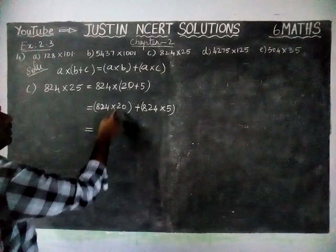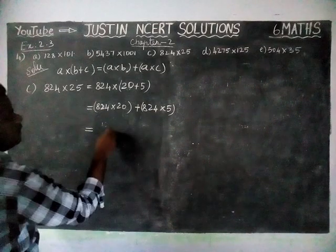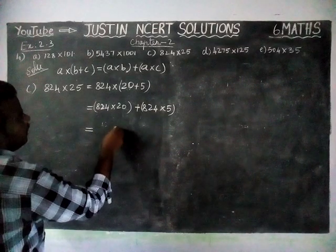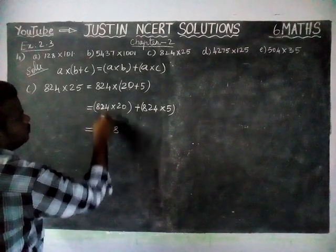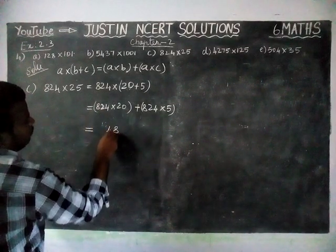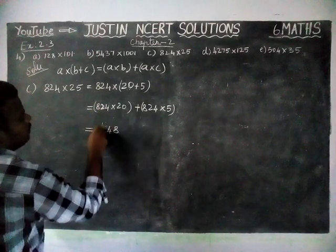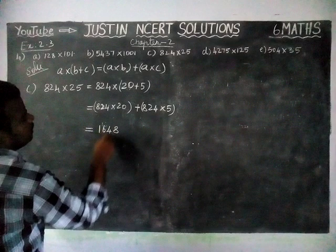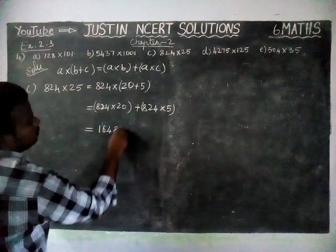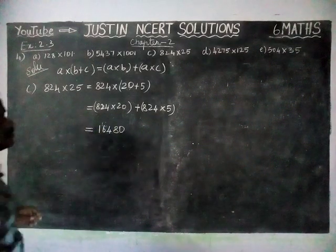Now we have to multiply: 4 2s are 8, 2 2s are 4, 8 2s are 16, and here we have 0 so we add 0 here.